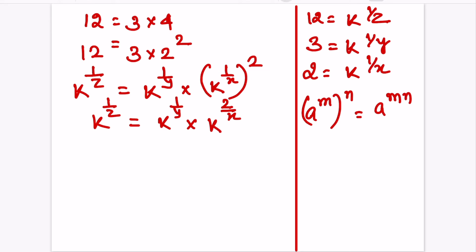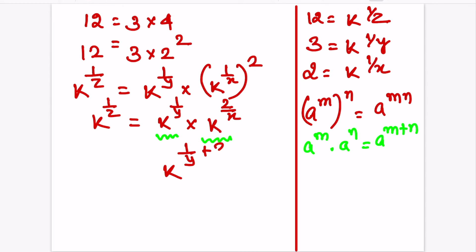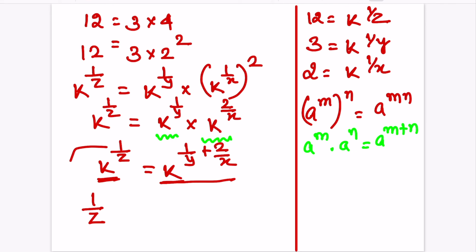We have one more rule: a to the power m into a to the power n can be written as a to the power m plus n. So, we can write this as k raised to 1 by y plus 2 by x, which is equal to k raised to 1 by z. Now, since the bases are the same — here it is k and k — we can equate the powers. So, equating the powers: 1 by z is equal to 1 by y plus 2 by x.